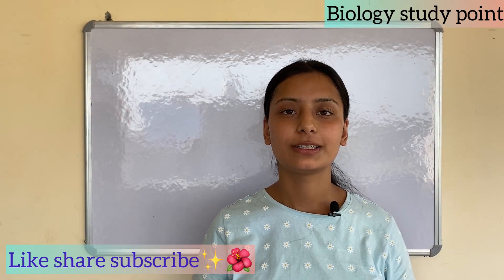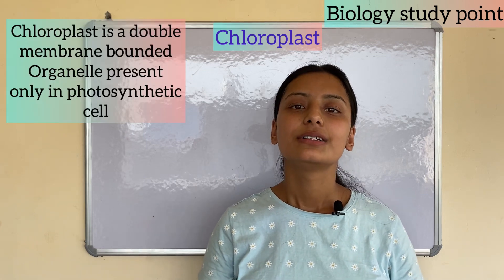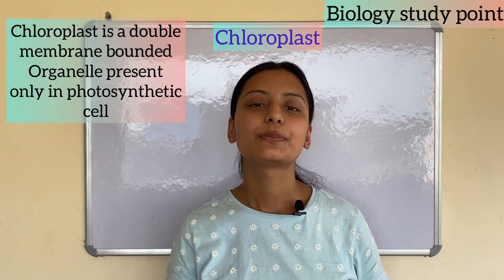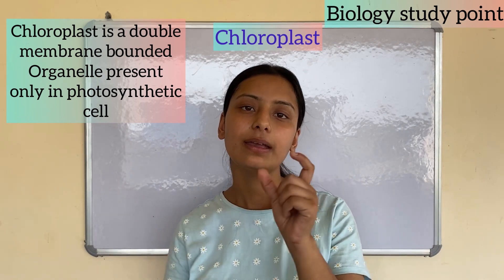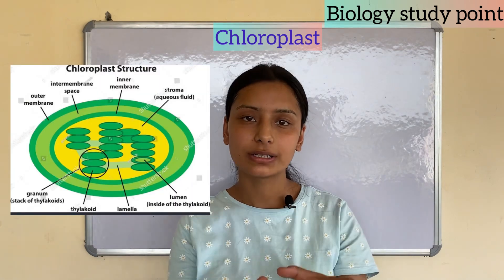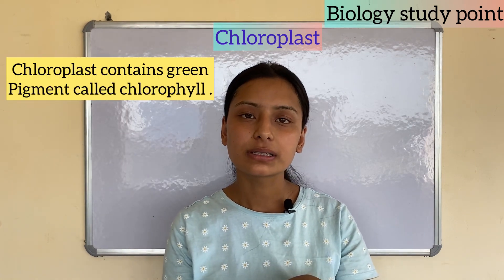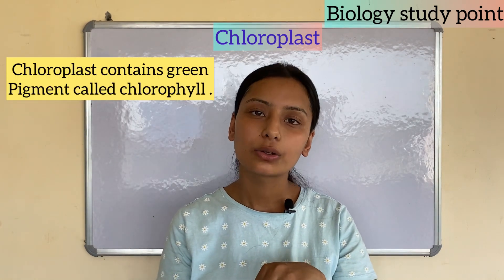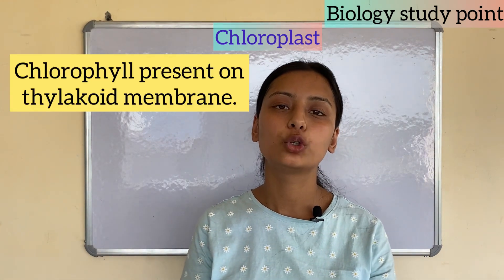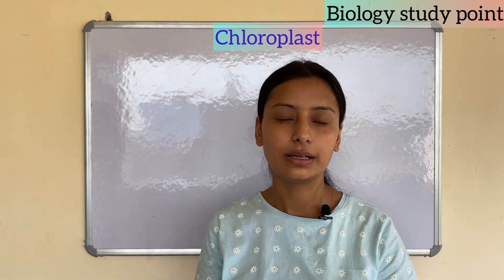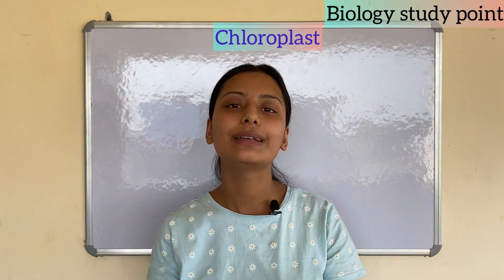Hello everyone, welcome to Biology Study Point. In this video we will talk about chloroplast. Chloroplast is a double membrane-bounded organelle which is present only in photosynthetic cells — meaning it is found in those cells or organisms that can perform photosynthesis. Chloroplast contains a green pigment called chlorophyll, found only in green plants which can make their own food through photosynthesis.